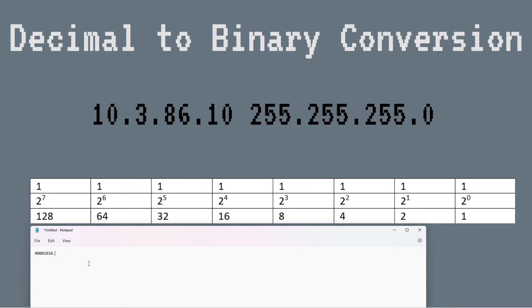So with 3: can we do 3 minus 128 and get a positive number? No — zero. 3 minus 64? No. 3 minus 32? No. 3 minus 16? No. 3 minus 8? No. 3 minus 4? No. 3 minus 2? Yes — that's a one. The remainder is 1. How about 1 minus 1? Yes — that's a one. So that's our second octet.